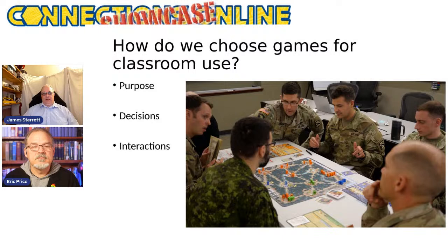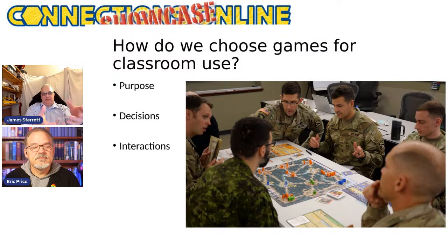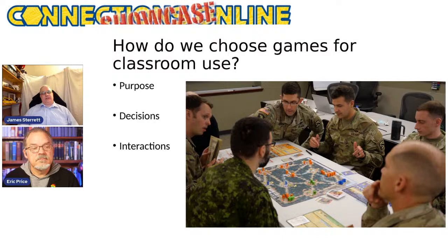All games are fundamentally a cycle: here's a set of information, the player makes decisions, the model runs forward and presents new information. In a first-person shooter, this may happen 60 times a second; in a heavy strategic board game, the cycle might happen once every two or three hours. We need a faster cycle for classroom games, but we must make sure the interactions—both the information and the affordances—drive people to wrestle with the things that matter.